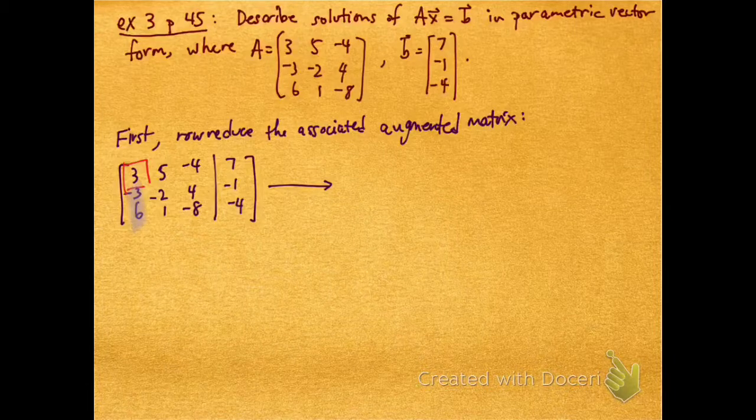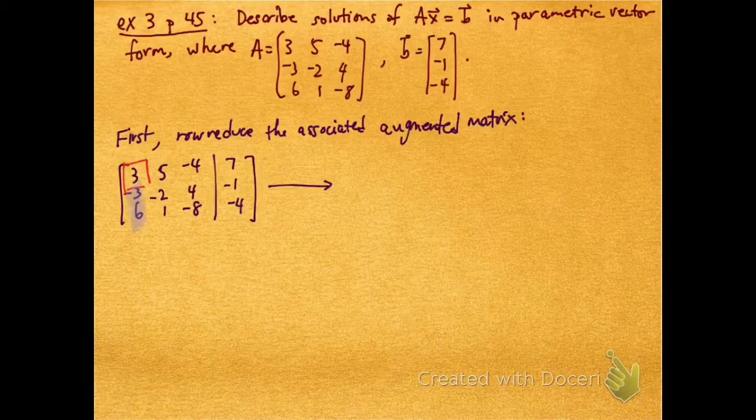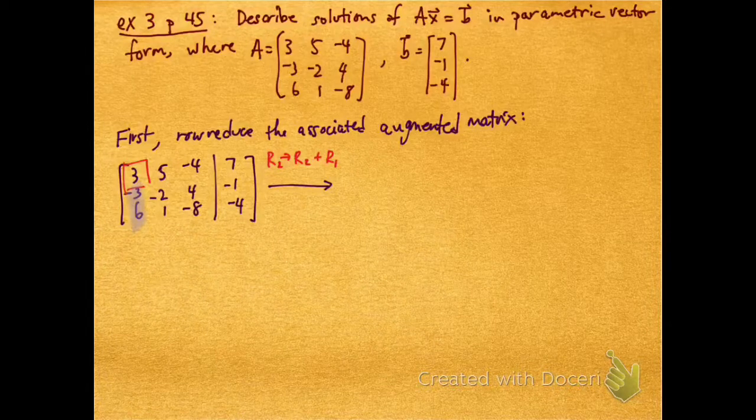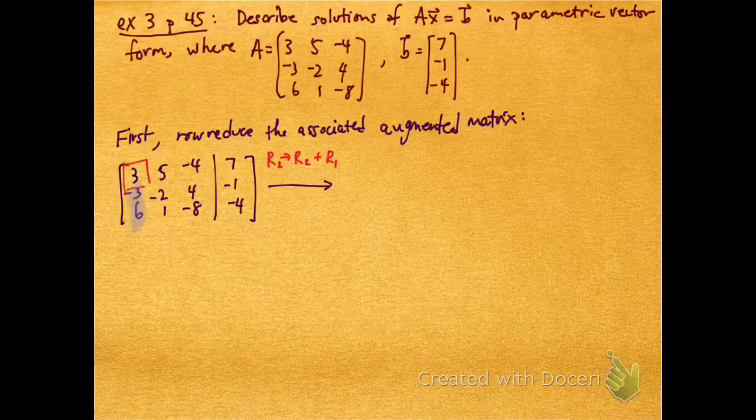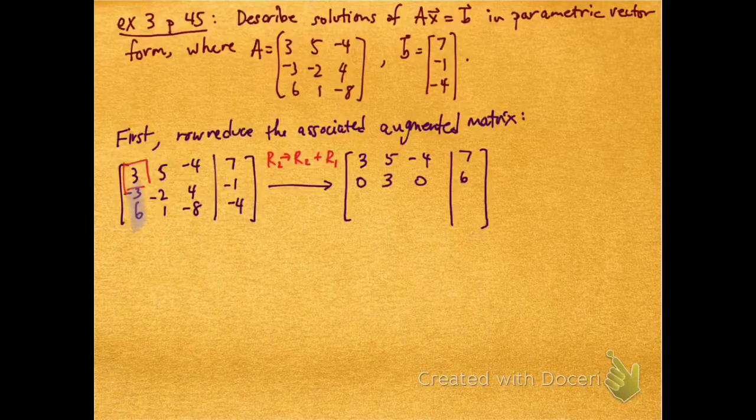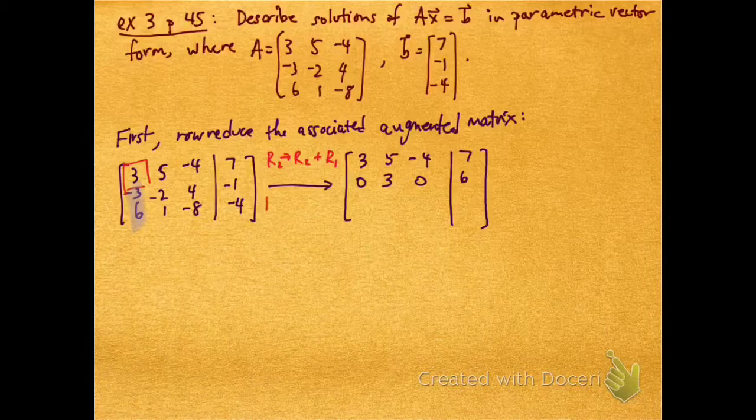I'm going to use that to kill off all the entries below. So I can get rid of the -3 in row 2 by replacing row 2 with row 2 plus row 1. That doesn't change the first row, it changes the second row to 0, 3, 0, 6.